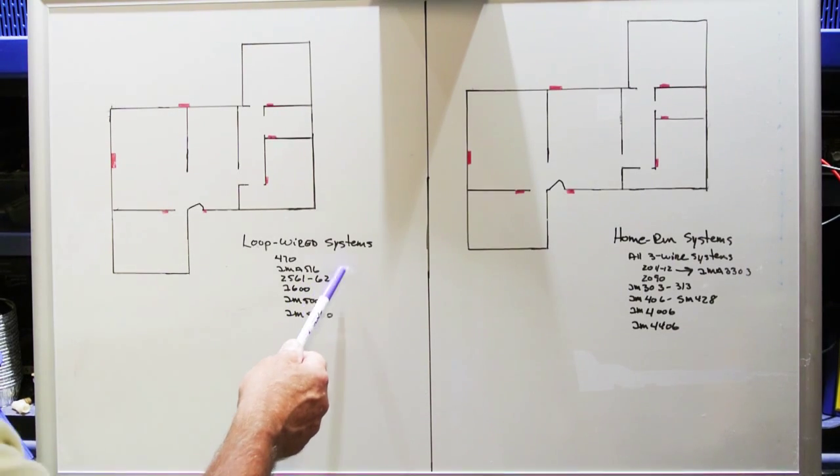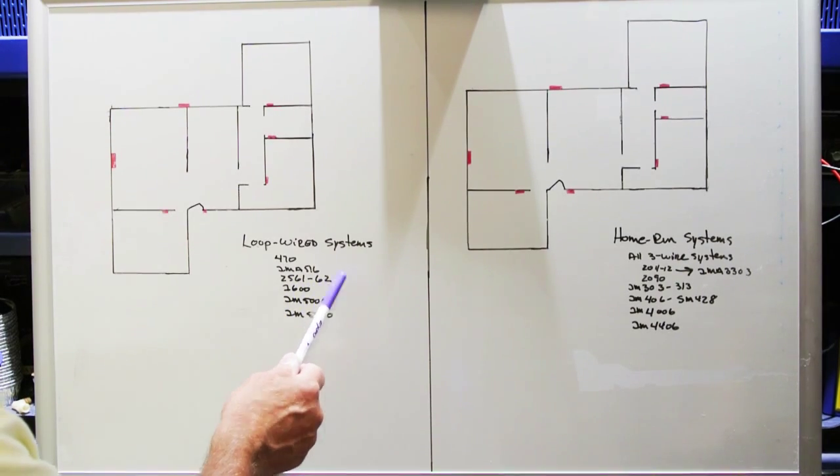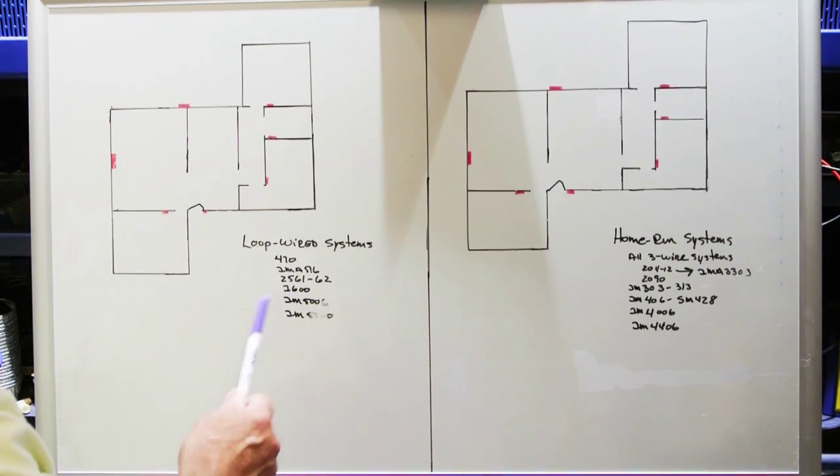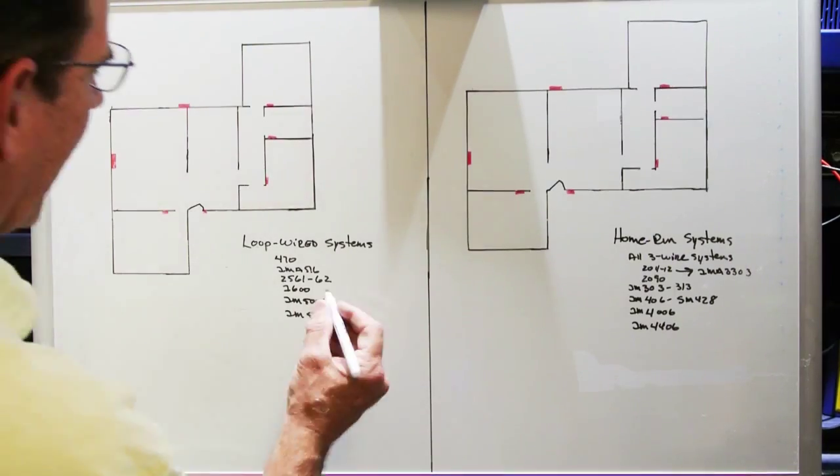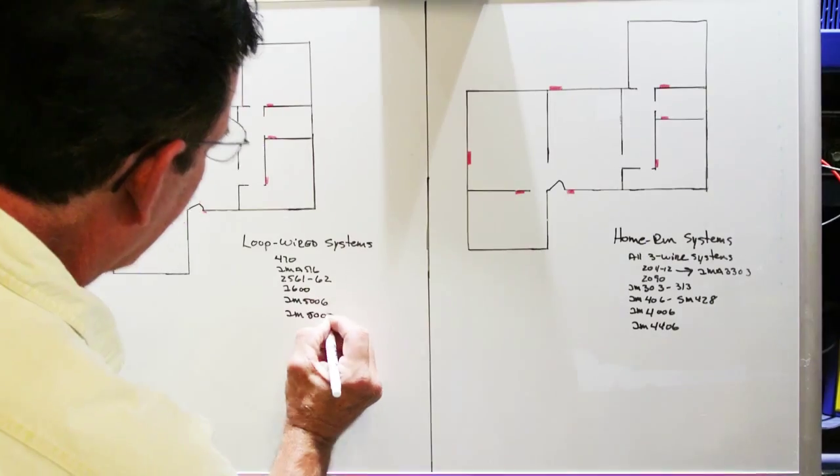Loop-wired systems for the most part are models 470, IMA516, 256162, the i600 system, the IM5006 and the IM5000.